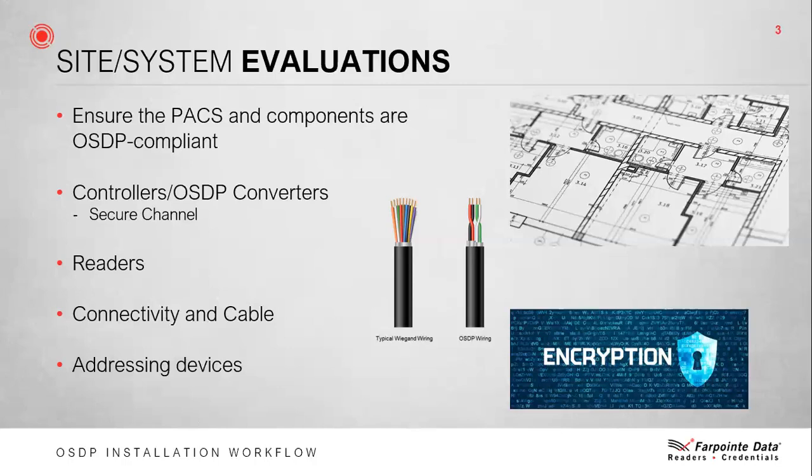Using multi-drop via the RS-485 layer can provide some advantages: fewer conductors, which saves on total cost; longer wire runs — for example, RS-485 can go up to 4,000 feet on the proper cable; and less need for controller real estate. If you decide to utilize RS-485 in a multi-drop topology, the readers you use must facilitate the ability to be assigned an address from an OSDP controller.